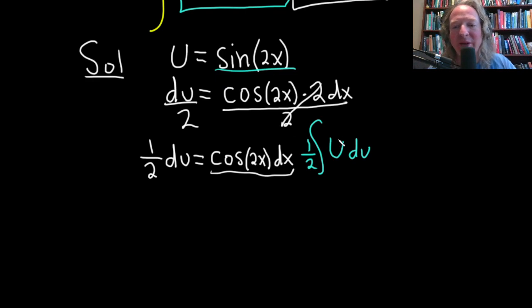Now we can integrate this using the power rule. It basically says this is 1 half. You add 1 to the exponent. So that's going to be u squared over 2. And then plus c, which is our constant of integration.